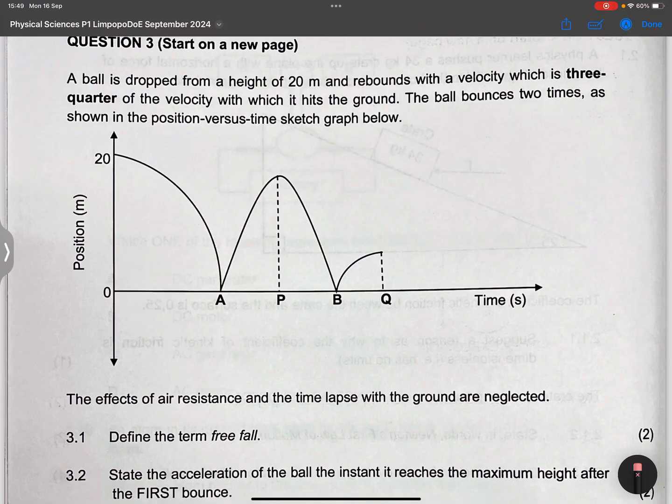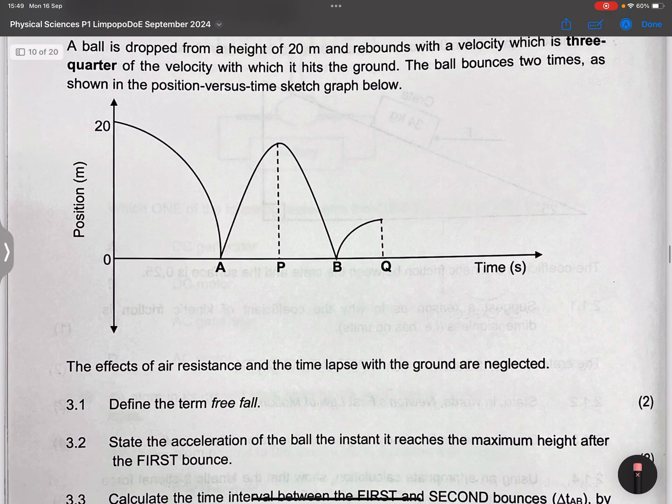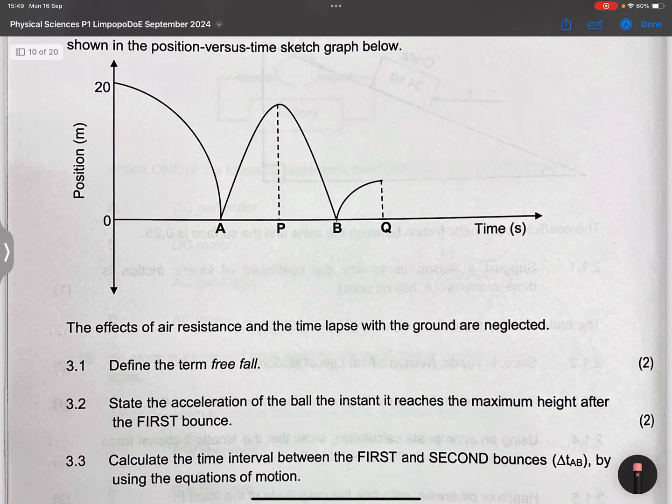We can see that the displacement or rather the position of the ball when it was dropped must have been 20 meters above the ground. They say the effects of air resistance and the time lapse with the ground are neglected.